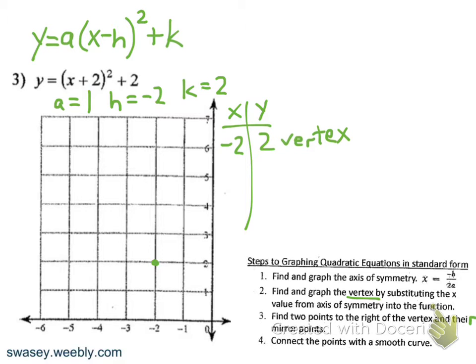The axis of symmetry is always a vertical line that goes through the vertex, so we can go ahead and graph that vertical line x equals negative 2. That's our axis of symmetry, so we've done step 1.